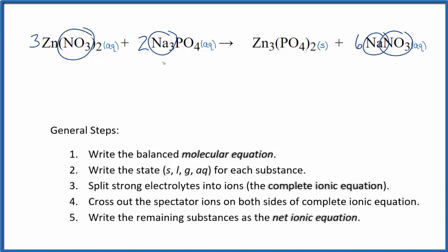But most phosphates, with the exception of sodium phosphate and some other group 1 elements, are insoluble. That means when these two substances react, this is going to be a solid. It'll fall to the bottom of the test tube as a precipitate.